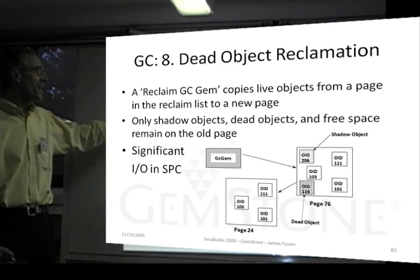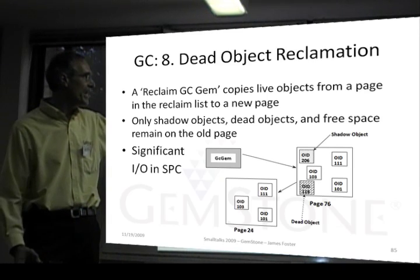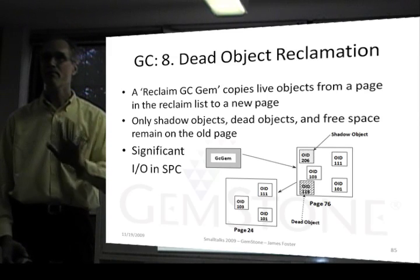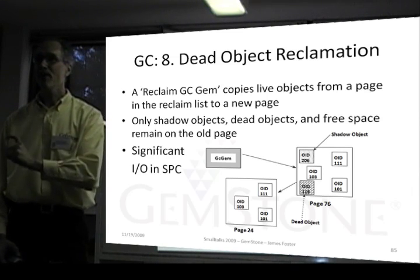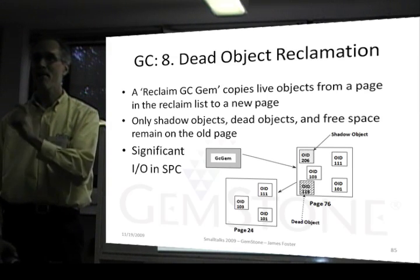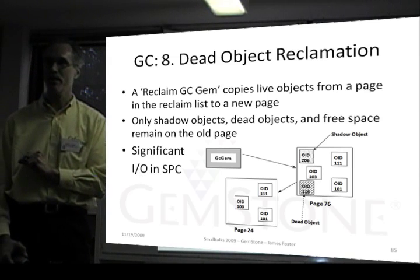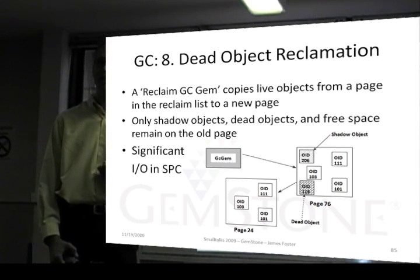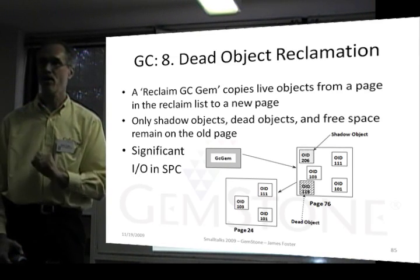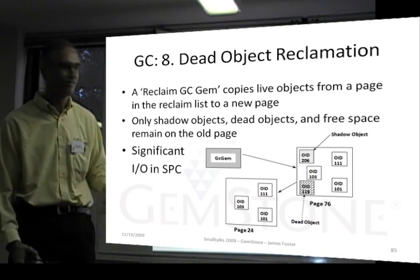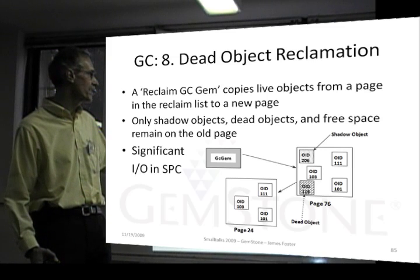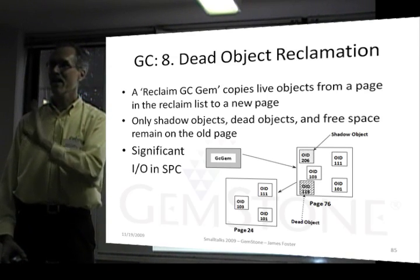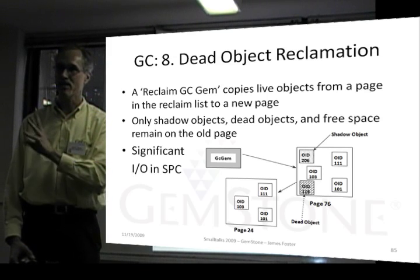There's a reclaim GC gem that copies live objects from a page in the reclaim list to a new page. Before we can reclaim the space, we have to have moved all live objects off the page — you never reclaim part of a page, you can only reclaim all of a page. We take all the non-dead objects on this page and copy them to a new page, so now this page only contains dead and shadow objects and free space. Once that is identified, we keep a separate list of pages that contain only shadow, only dead, and only free space — those are the pages we're going to reclaim.